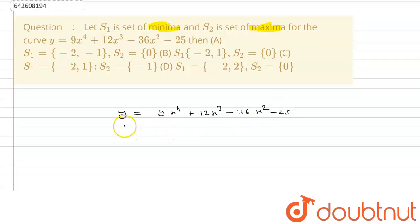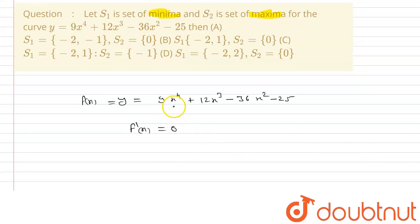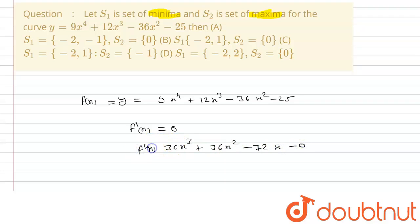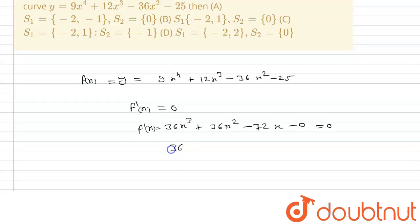So we have the function y = 9x⁴ + 12x³ - 36x² - 25. Let's call this f(x). To find maxima and minima, let's find f'(x) and equate it to 0. So f'(x) = 36x³ + 36x² - 72x = 0.